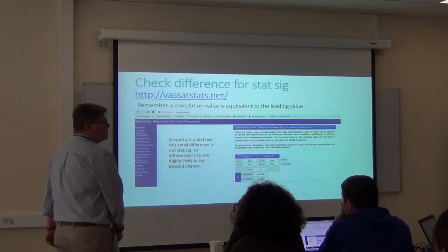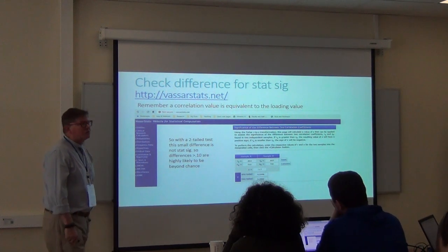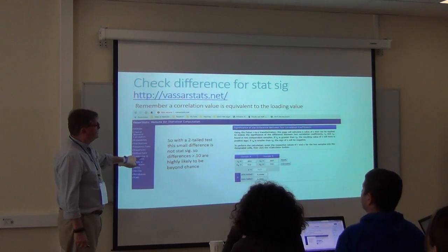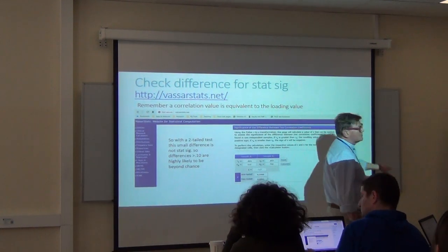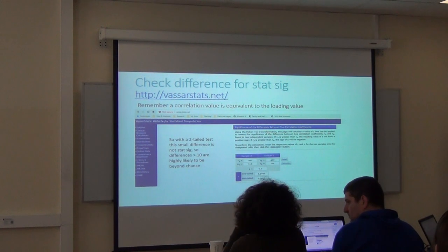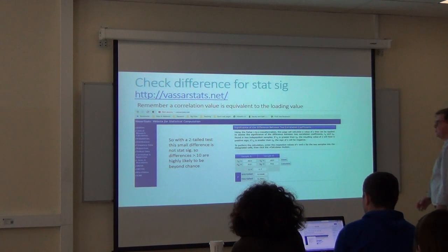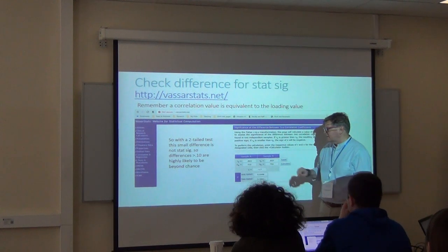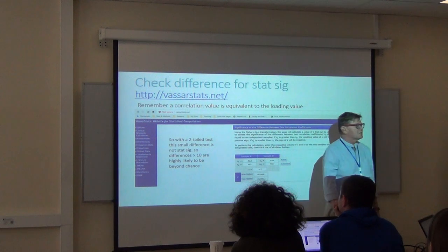The United States has a repository of statistical procedures, including one for testing the significance of the difference between two correlation coefficients. The standardized regression coefficient is the same value as the correlation, so you can compare them. Putting in the two correlations — .82 and .85, with sample sizes 312 and 702 — the two-tail test result is not significant.